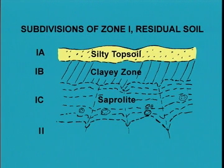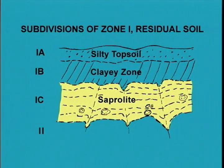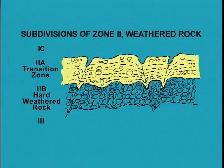Zone 1, the residual soil zone, may be subdivided into the A horizon (a silty topsoil), B horizon (a clayey zone), and the C horizon (the saprolite zone). While the upper two horizons are only a few feet in thickness, the saprolite zone may be tens of feet thick or greater. The saprolite is predominantly silt with varying proportions of clay and sand, and tends to be more compact with depth. The original rock structure and even the rock texture can be seen as relic structures. The weathered rock zones may similarly be divided into Zone 2A, a transitional zone of both rock and soil material, and Zone 2B, hard weathered rock but still with soil-like materials along the joints.